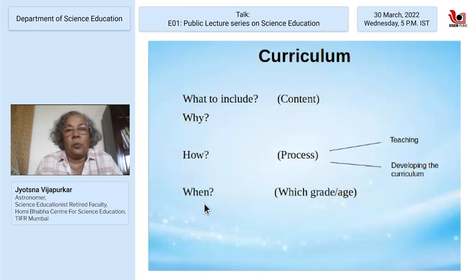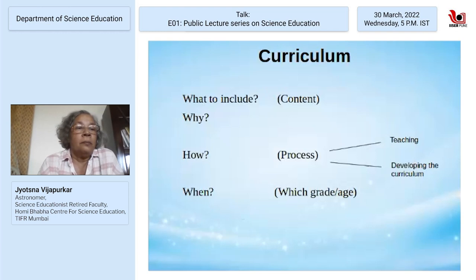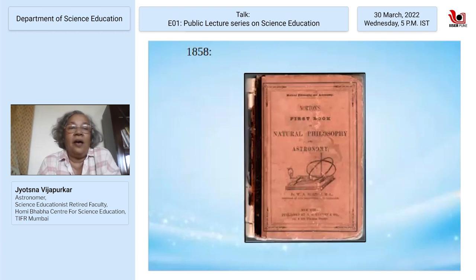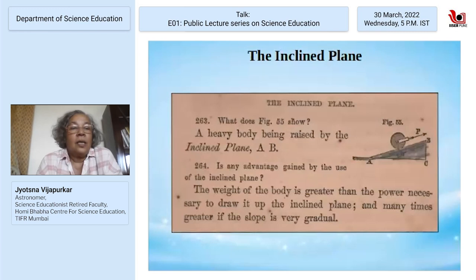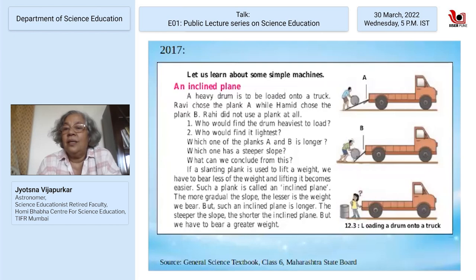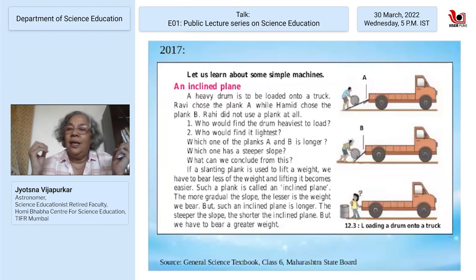We need to talk about the process of how we teach once the curriculum is ready, and also how we develop the curriculum. Another key question — going back to cognitive developmental stages — is at what grade do we teach any concept we think is important. When you make textbooks and design curricula without a deep look at what children can do at what age and which concepts are important, you get poor results. I have a 1858 book of natural philosophy with a chapter on the inclined plane, and in 2017 a Maharashtra state board book still has a chapter on inclined planes. Our curricula tend to get written this way.